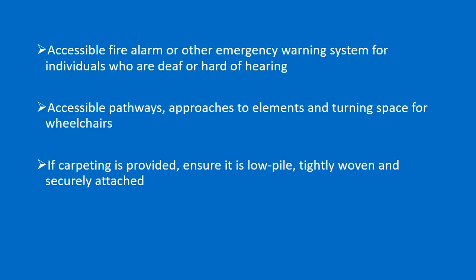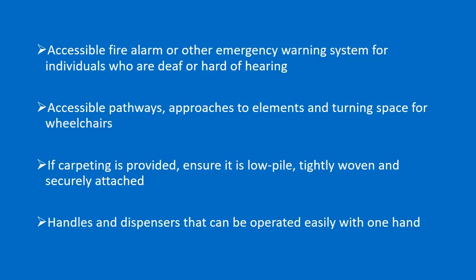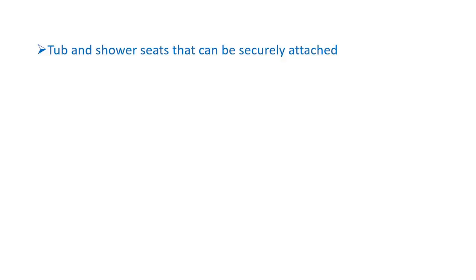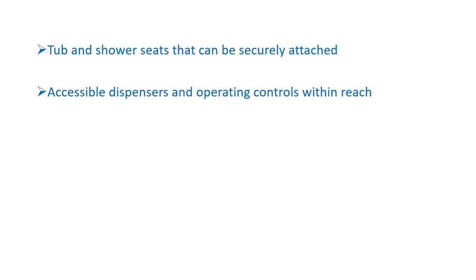If carpeting is provided, ensure it is low-pile, tight-woven, and securely attached. Handles and dispensers that can be operated easily with one hand. Tub and shower seats that are securely attached. Accessible dispensers and operating controls within reach.